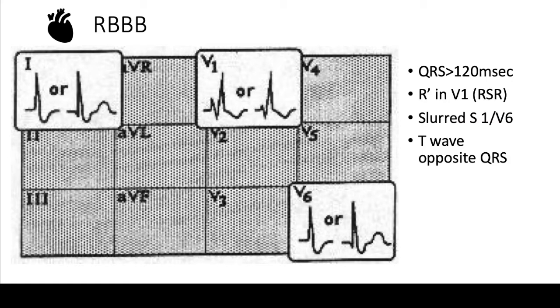The same is true for right bundle branch blocks. They have a ton of criteria, but if you just focus on V1, 95% of the time you'll be right. In V1, if you have a majority positive deflection in the QRS complex and a wide QRS greater than 120 milliseconds, you'll have a right bundle branch block.